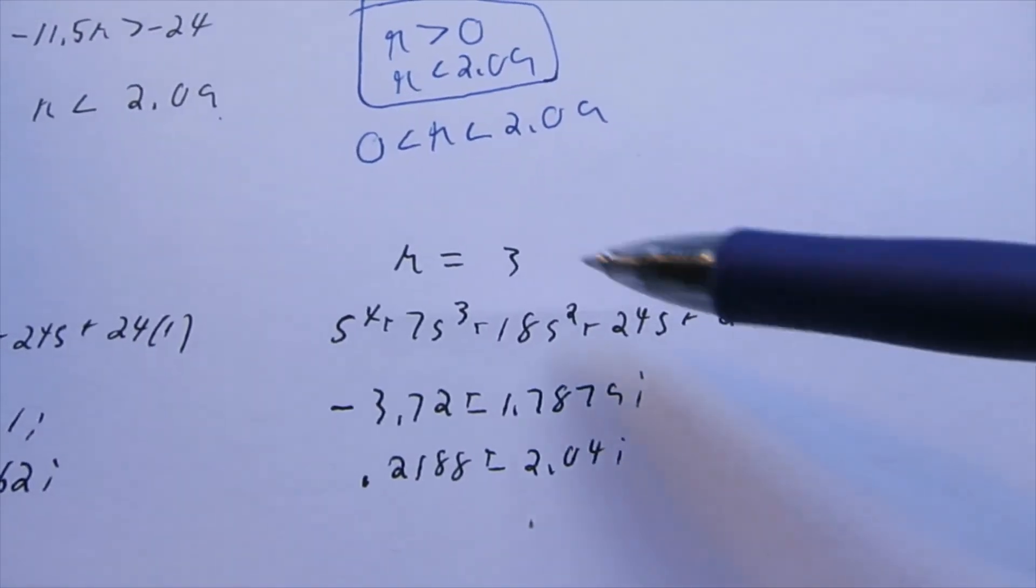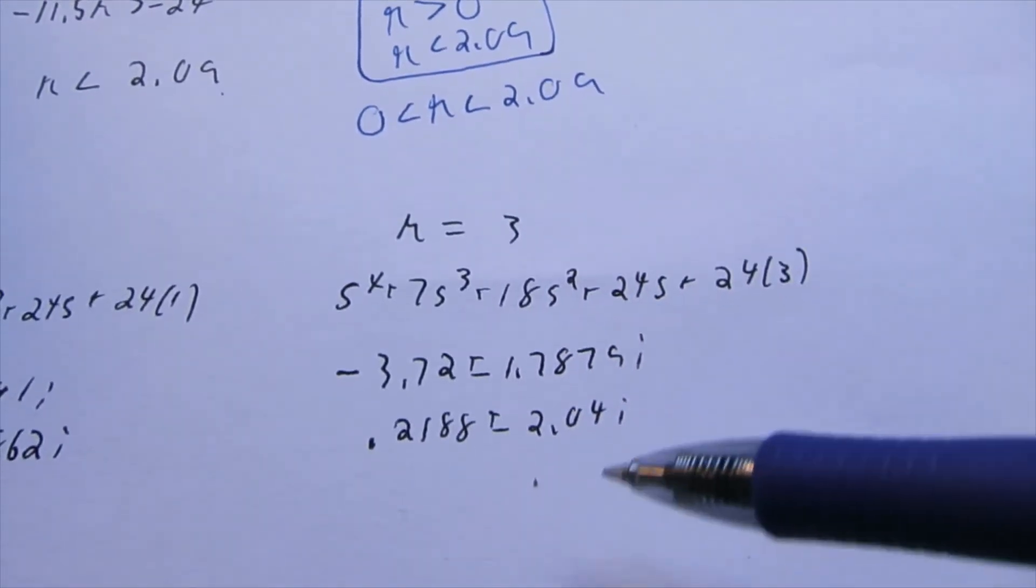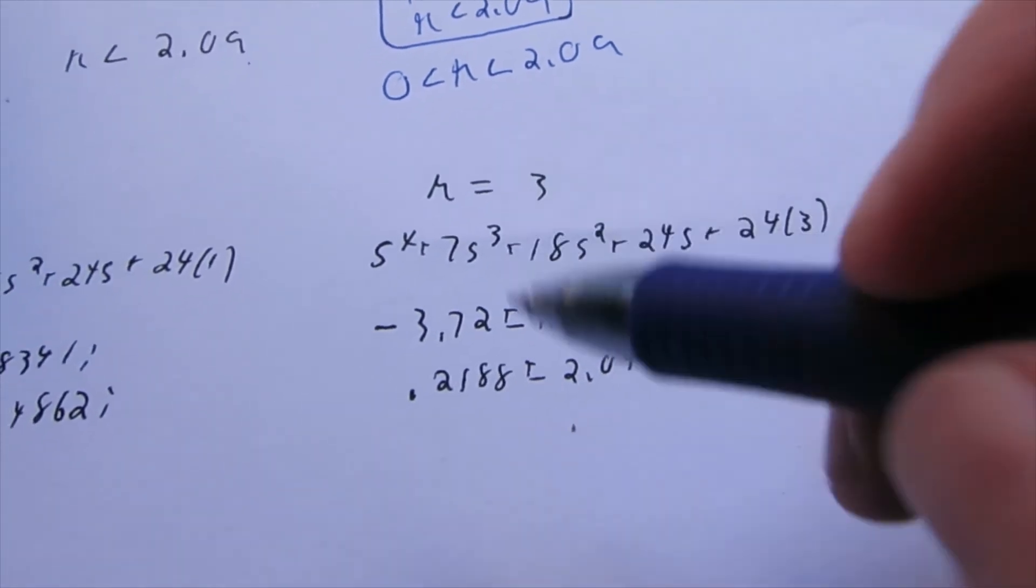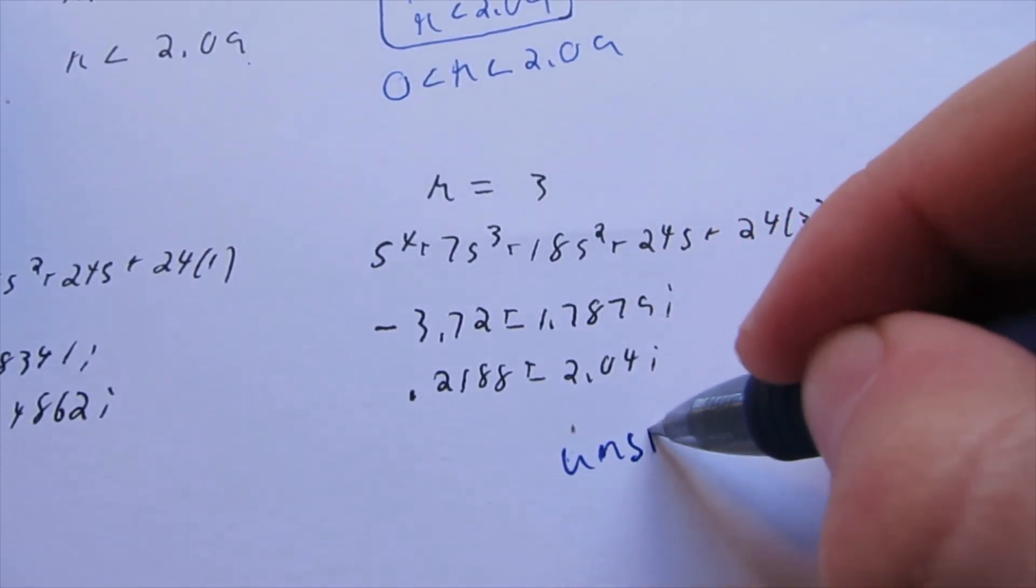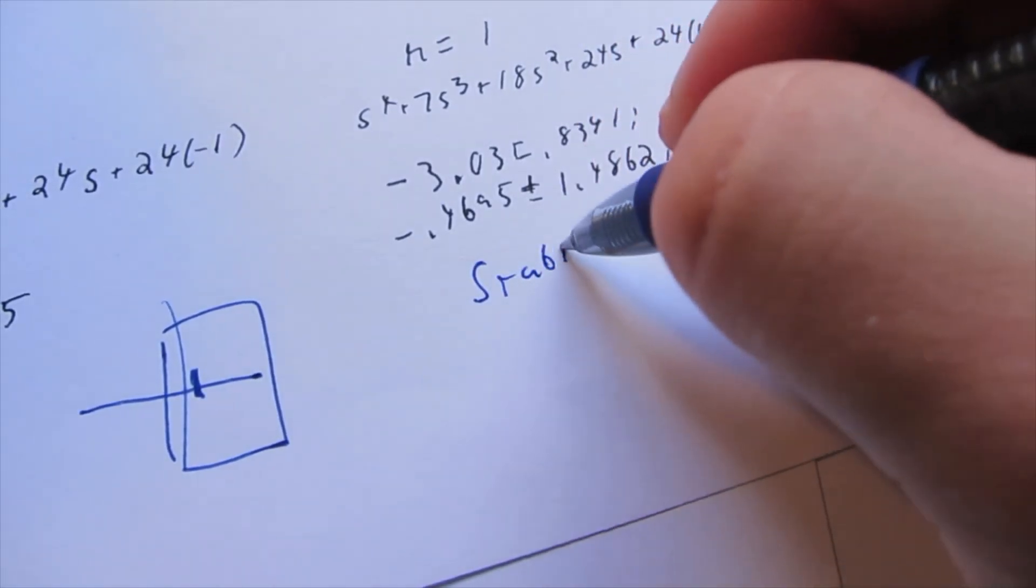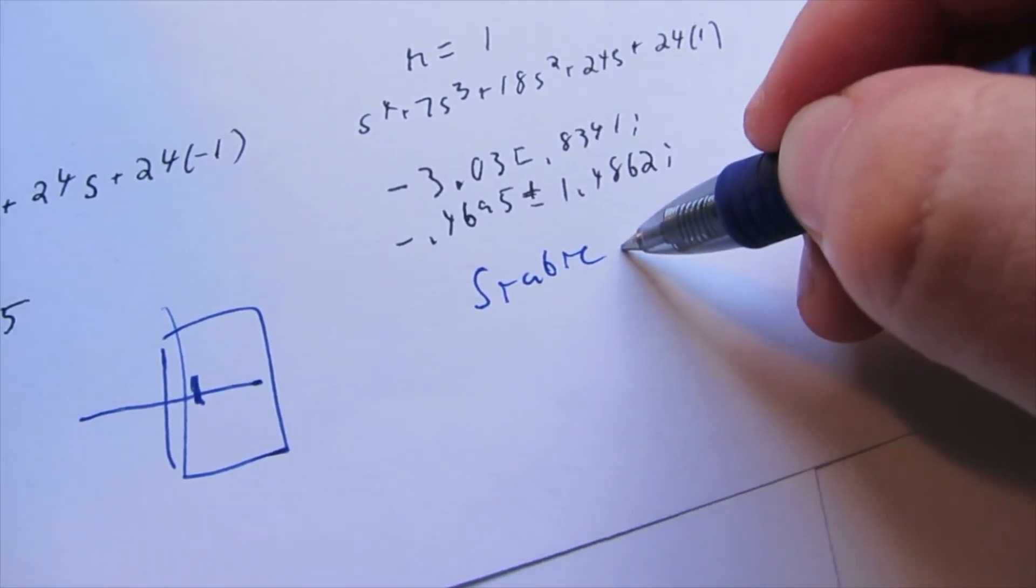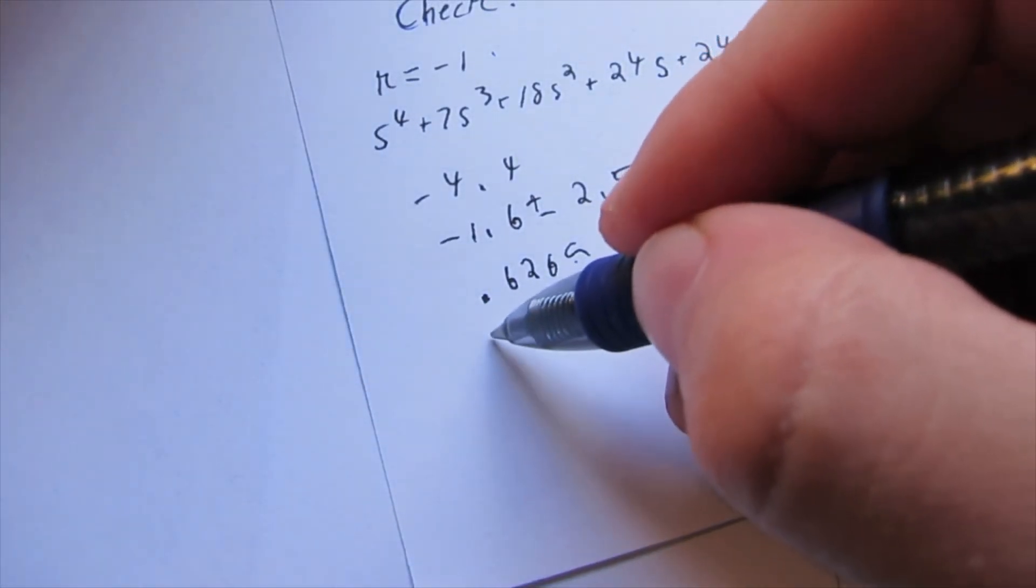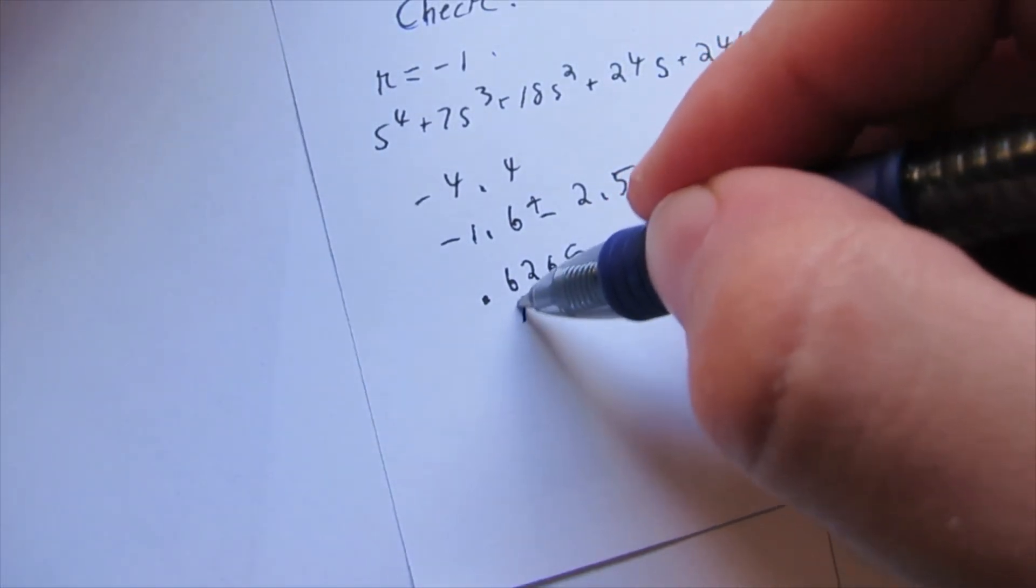Now, we look at K equals 3. So, this should be unstable. What do we have? We have a positive root. Therefore, that is unstable. This is stable because it has only negative roots. And then, again, this is unstable because it has a positive root.